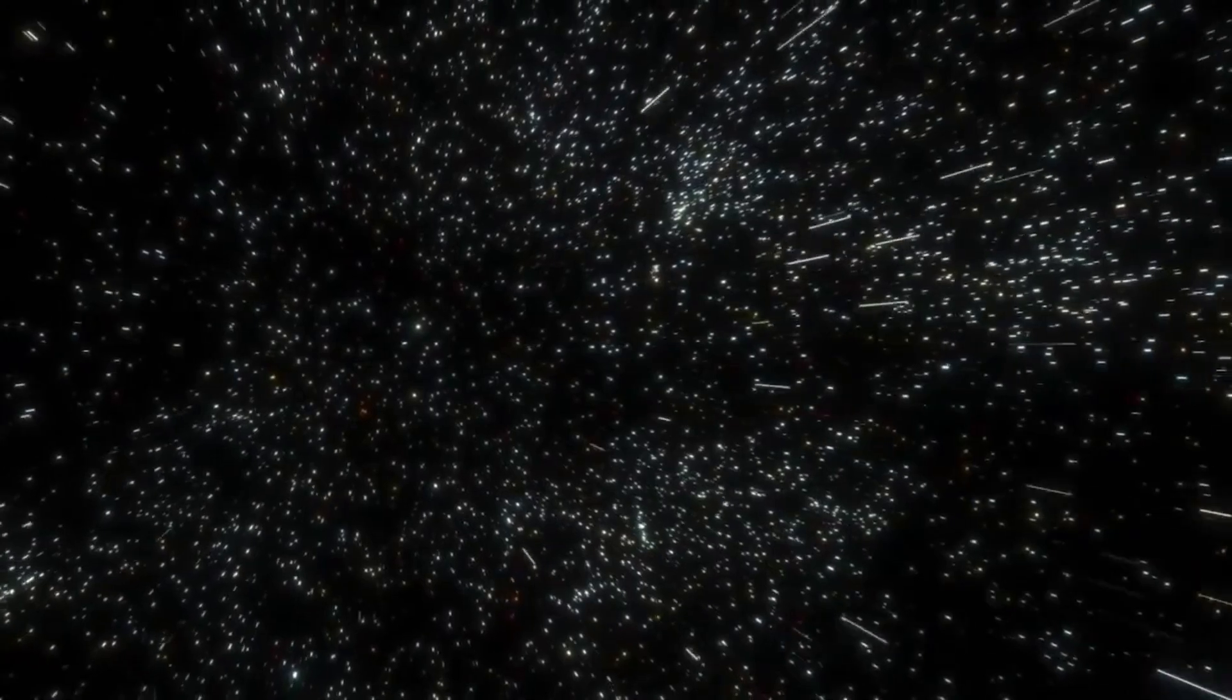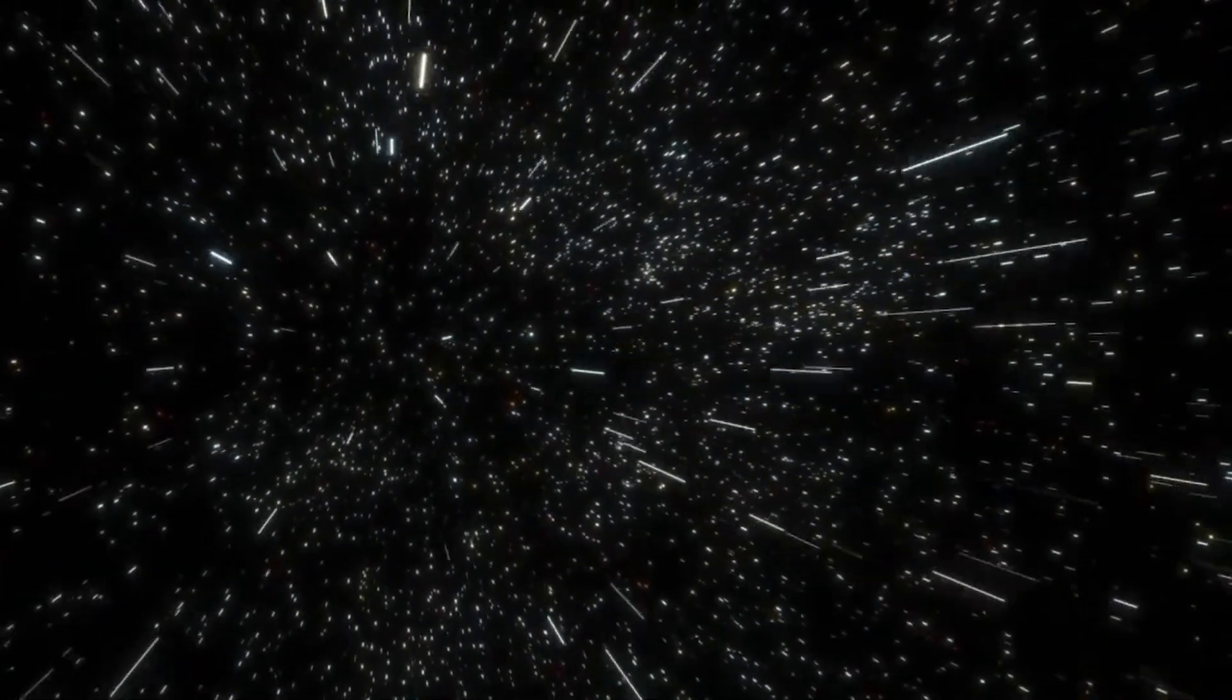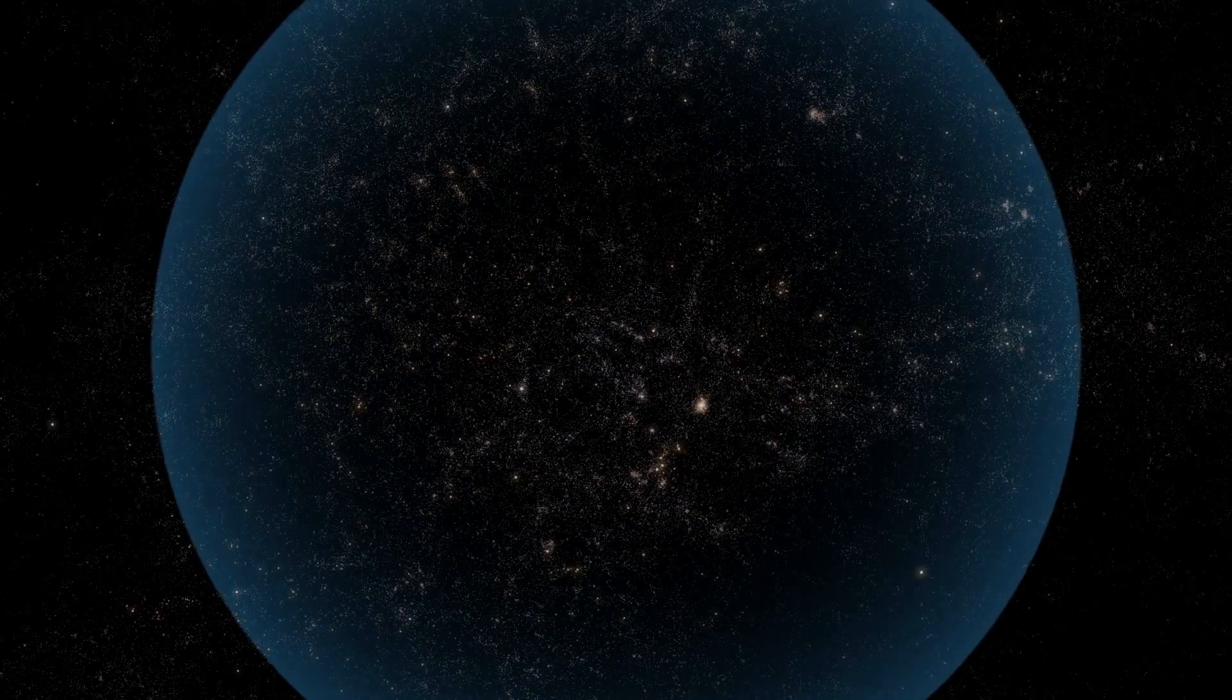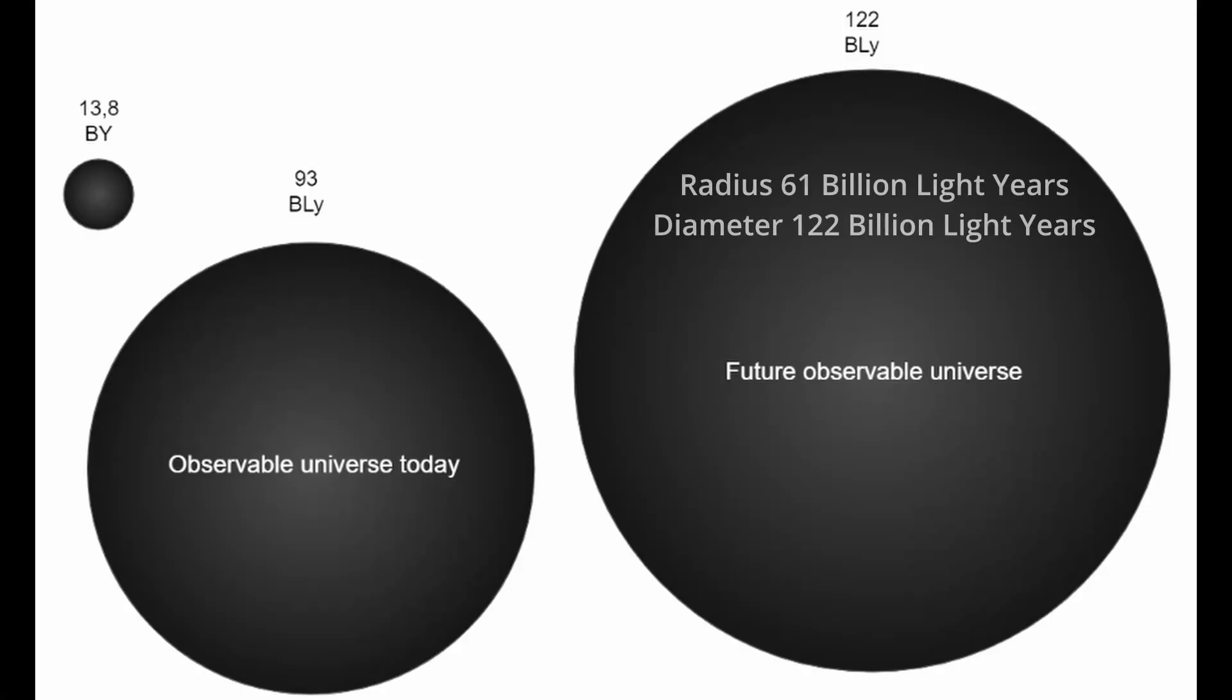As time goes by, the age and size of the universe will increase. Since the most distant objects will move away from us at an ever-increasing rate, there is a limit to how much of the universe we will be able to observe. This limit is called the future visibility limit and is estimated to be around 61 billion light years.